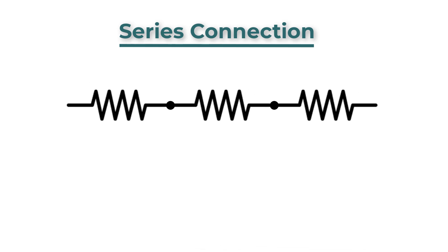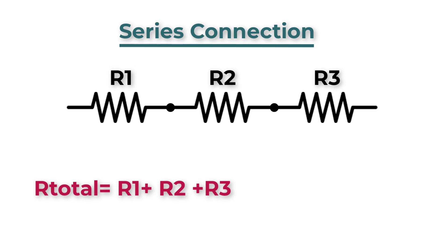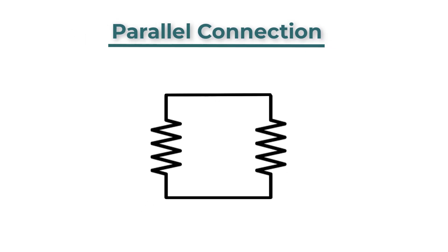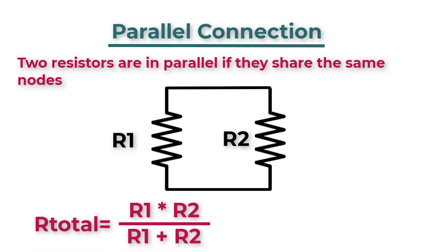To calculate the total resistance for a series connection, just add the resistances of each resistor together. The second type of connection is the parallel connection. Two elements are in parallel if they share the same nodes.